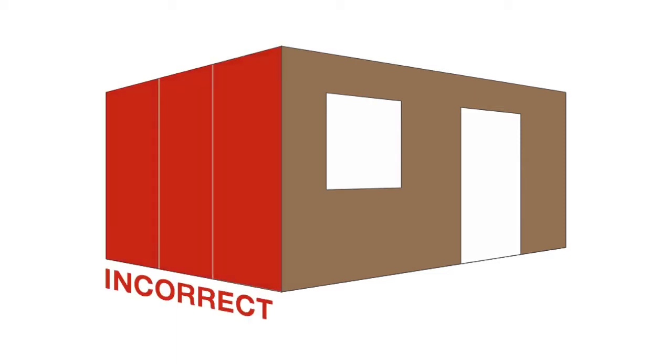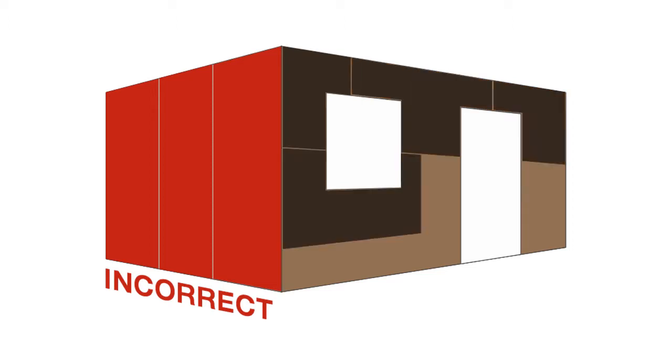When installing the fibre cement sheet, all sheets should be fitted horizontally, not vertically. Stagger vertical joins so they are not continuous. Ensure all joins in the fibre cement sheet are over studs or noggins. No joins should be made above the corners of windows or doors.